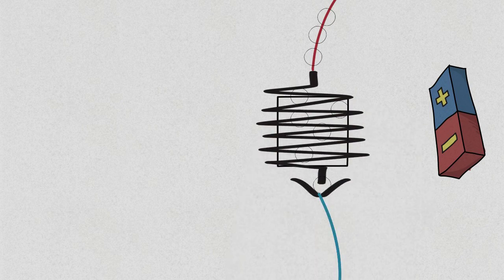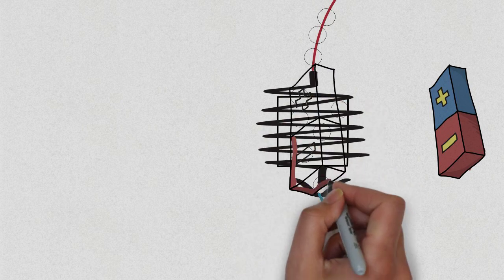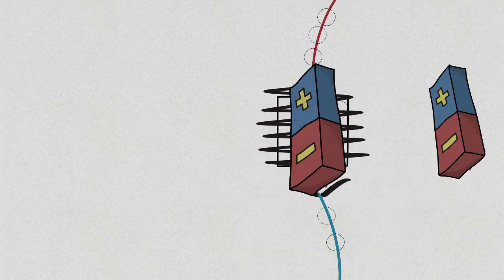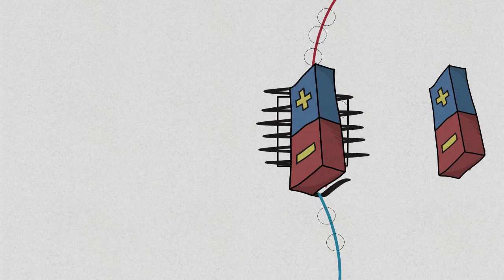As the current passes through the coil, the metal is magnetized, thus creating a magnetic field. This is called an electromagnet, an electromagnetic field.